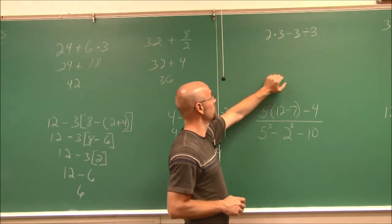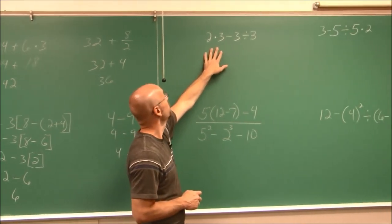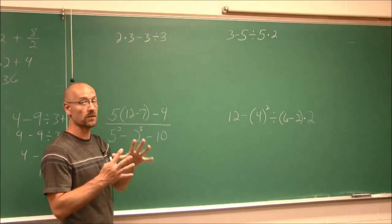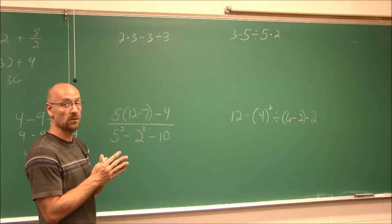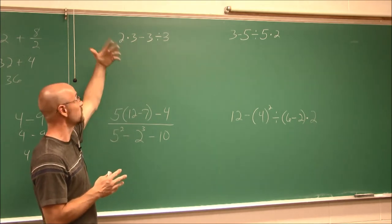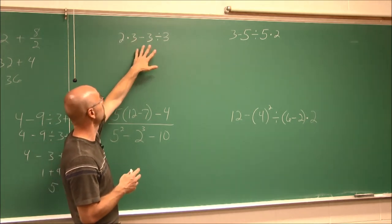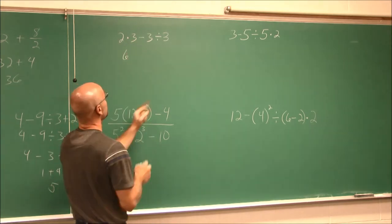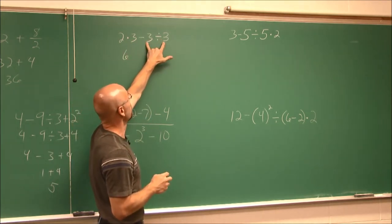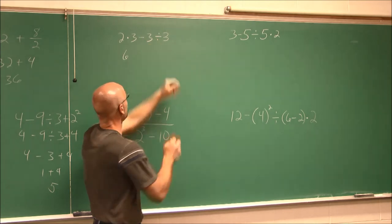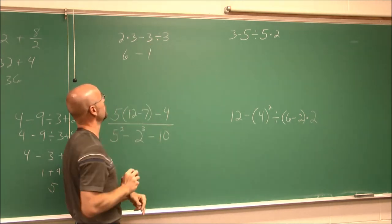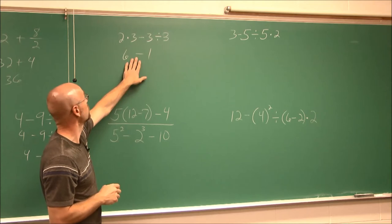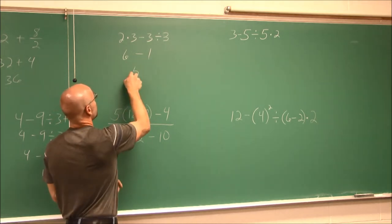We'll do two more examples. Here we have 2 times 3 minus 3 divided by 3. There are no exponents or parentheses, so we do multiplication and division from left to right. 2 times 3 is 6. 3 divided by 3 is 1, so this becomes minus 1. Now we do the subtraction: 6 minus 1 is 5.